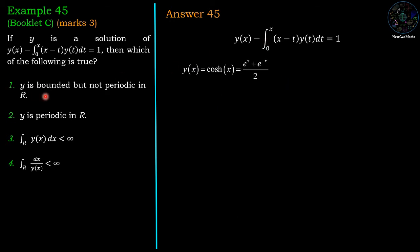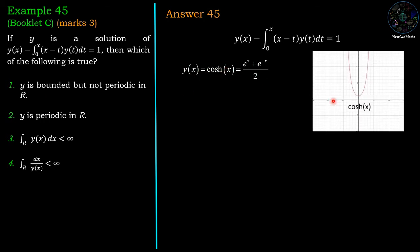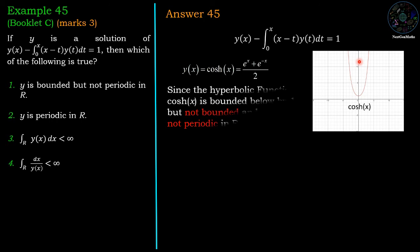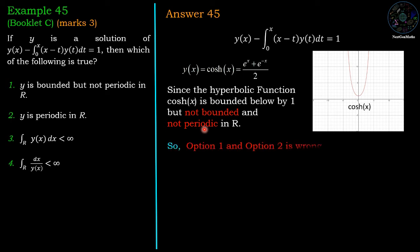Checking the first option: y is bounded but not periodic in R. The solution is cosh(x), which is bounded below by 1 but is not a bounded function overall. Therefore y(x) is not bounded, so the first option is cancelled. It is also not periodic, so the second option is also wrong. The first two options are incorrect.